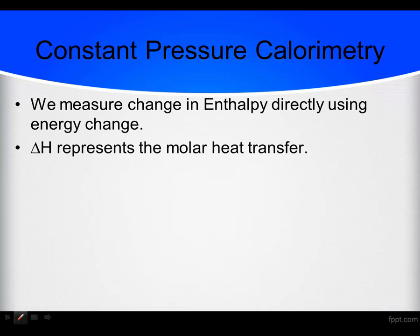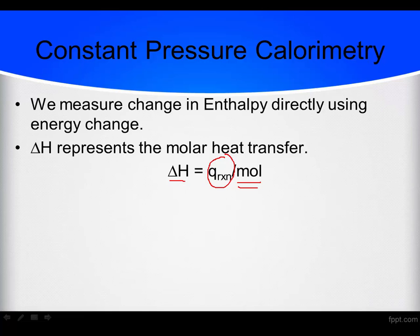The way we do that is this: delta H is going to represent the heat transfer per mole — the molar heat transfer. So what we wind up doing is calculating the Q of the reaction, finding out how much energy the reaction gives off, and then dividing that by the number of moles used in that reaction, so that we get a value of energy per mole. That is what delta H is expressed in — energy per mole. It's basically a two-step process.